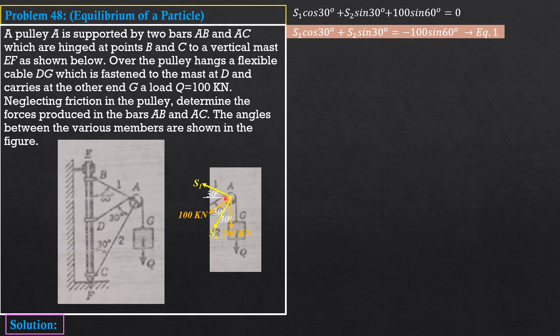Then summation forces Y equals 0, S1 sine 30. Then minus S2 cosine 30. Then minus 100 cosine 60, this one. This total angle is 60, so minus 100 cosine 60, minus 100 equals 0. Then simplifying, S1 sine 30 degrees minus S2 cosine 30 degrees equals 150. Equation 2.